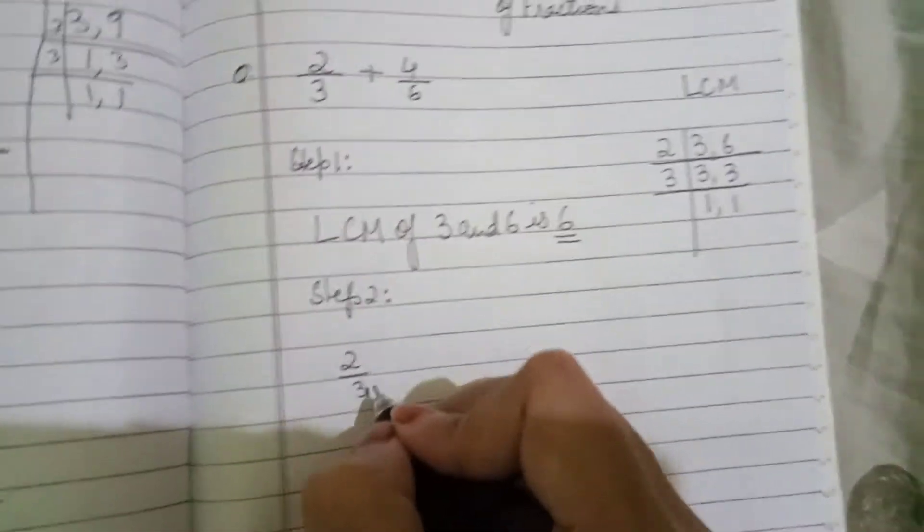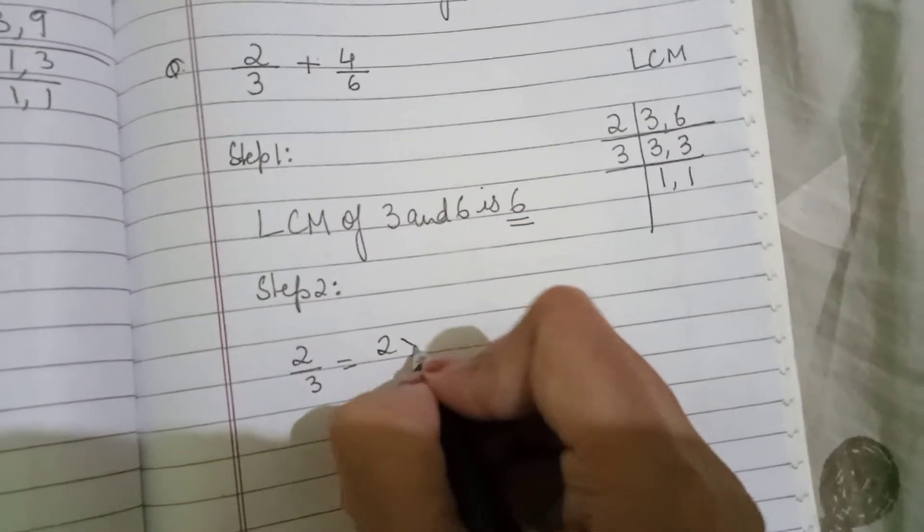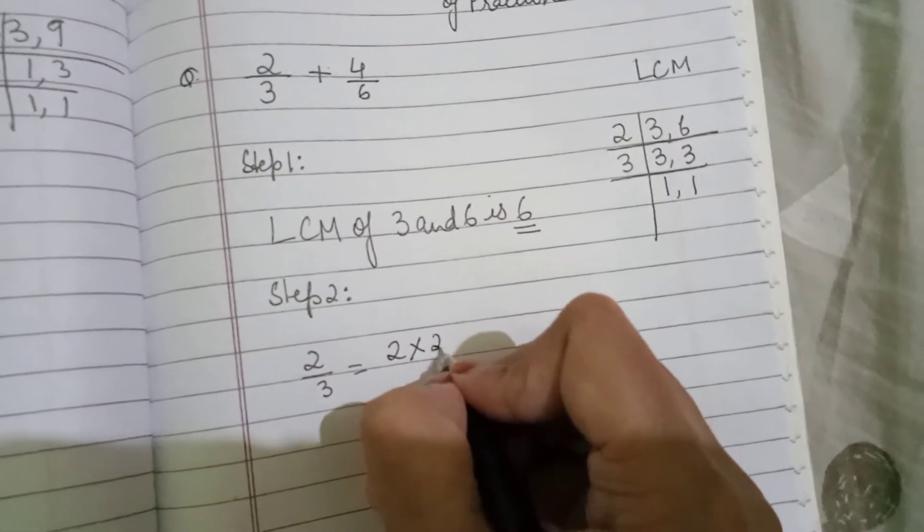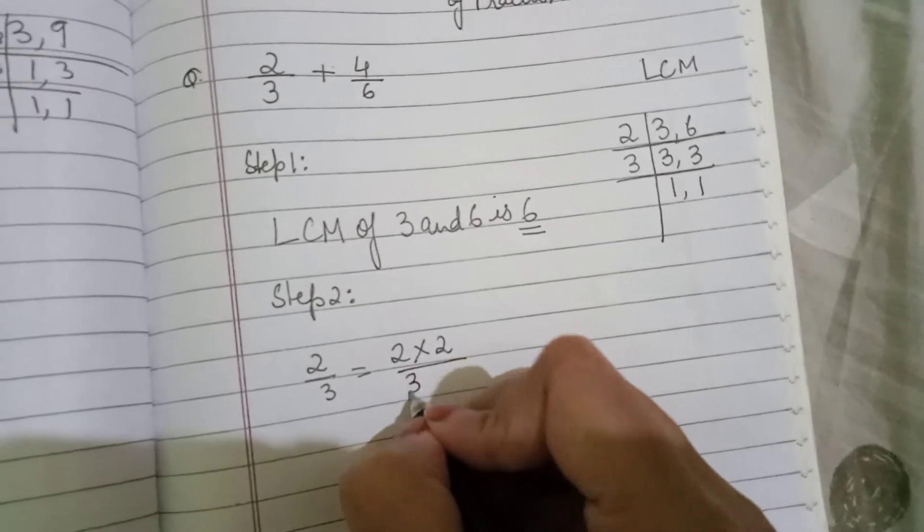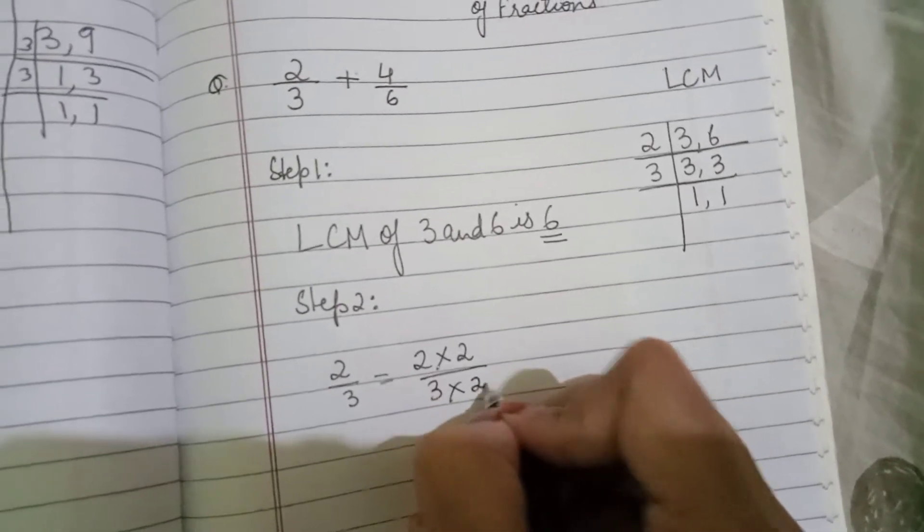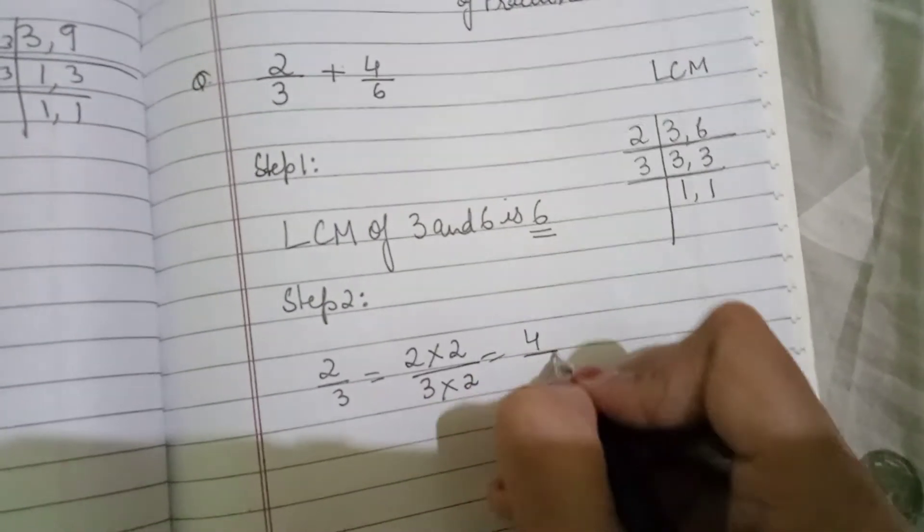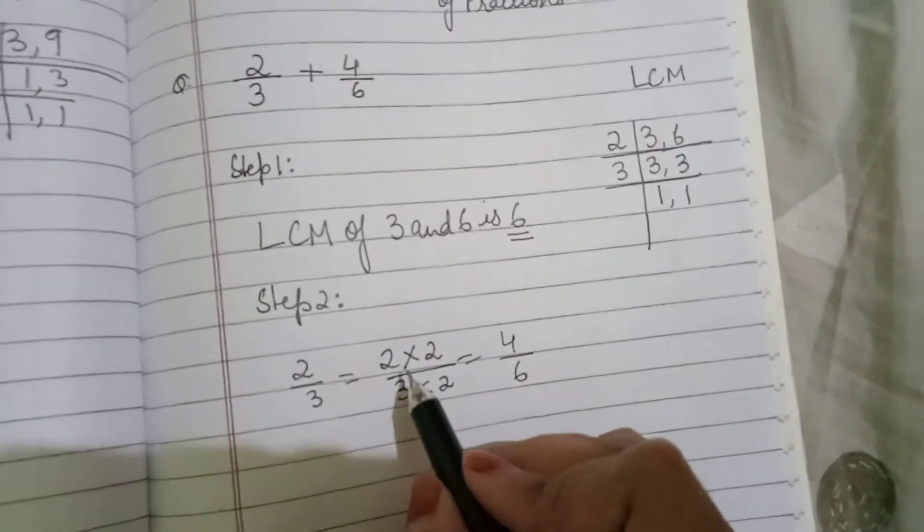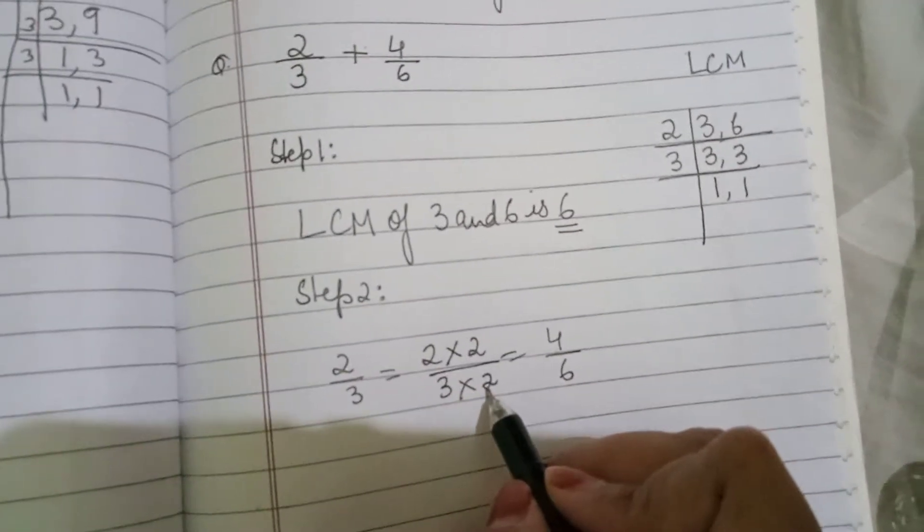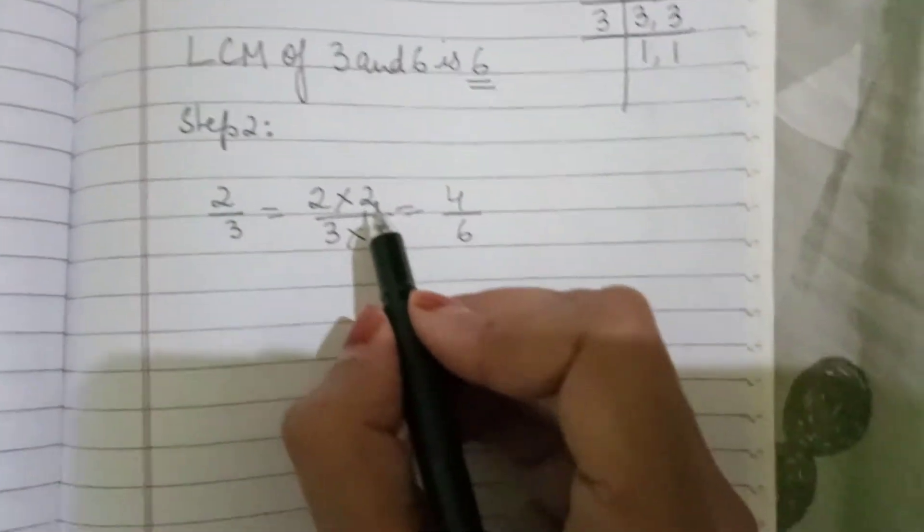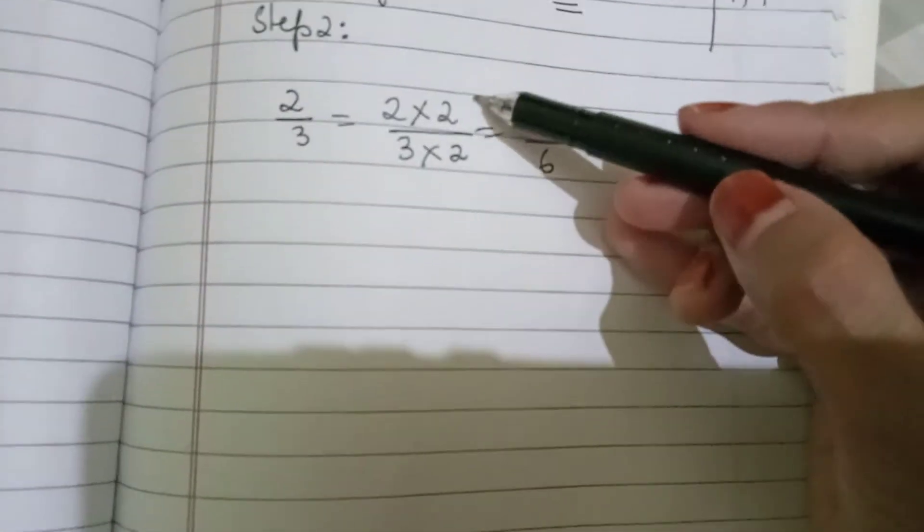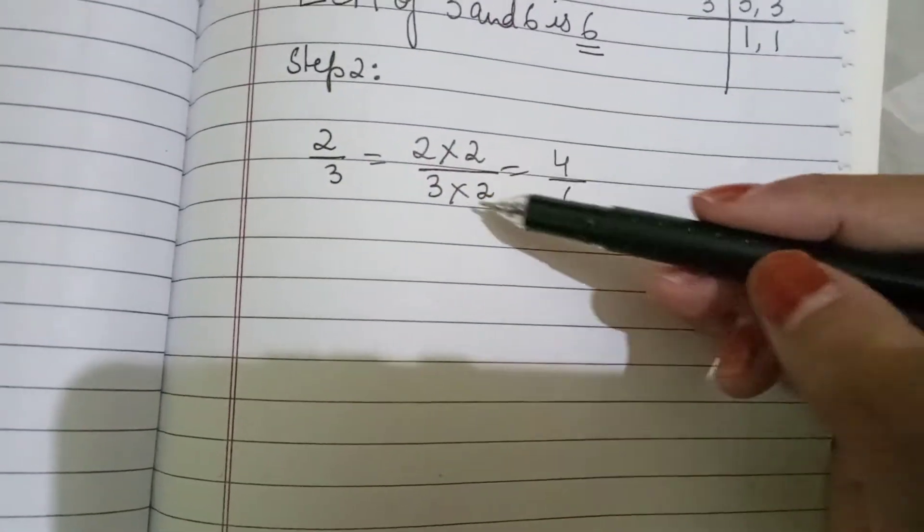So now, step number 2 says that 2 upon 3 is equal to, how many times? 2 times. Can you see? The number of times you are multiplying the denominator, the same number of times you will multiply the numerator. So, 2 times 2 is 4, 3 times 2 is 6.